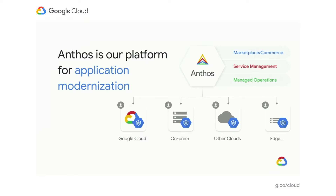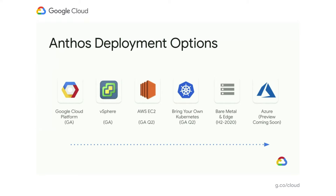Anthos is our platform for application modernization. It allows you to run on Google Cloud, on-premise, on other cloud providers, or at the edge. Anthos gives you managed operations, service management, and a marketplace so you can add more applications from third-party providers. Anthos also provides multiple deployment options including Cloud Platform, vSphere, AWS, bring your own Kubernetes, Bare Metal edge scenarios, and Azure coming soon.